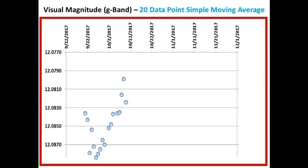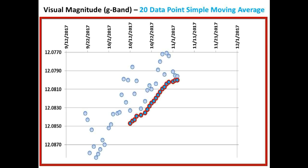So once we have accumulated 20 data points from Bruce Gary, we started calculating and displaying the 20 data point simple moving average, represented by the light blue circles with the red borders. As you can see, it is tracing out a curve that was brightening quickly initially, then it slowed for a short period of time, and finally rolled over to where it is now heading back in and dimming once again.